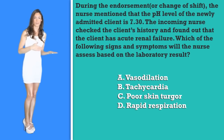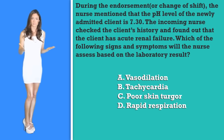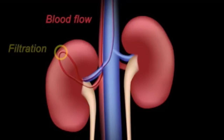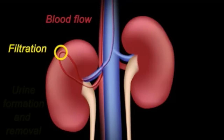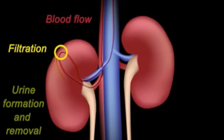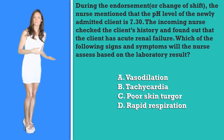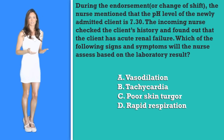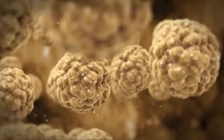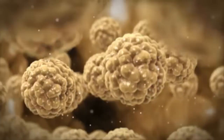You might ask why this patient is acidotic. One of the main roles of the kidney is to filter the blood and remove waste products. In acute renal failure, this is not being done properly or at all. Therefore, waste substances build up in the body, causing the patient to become acidotic.